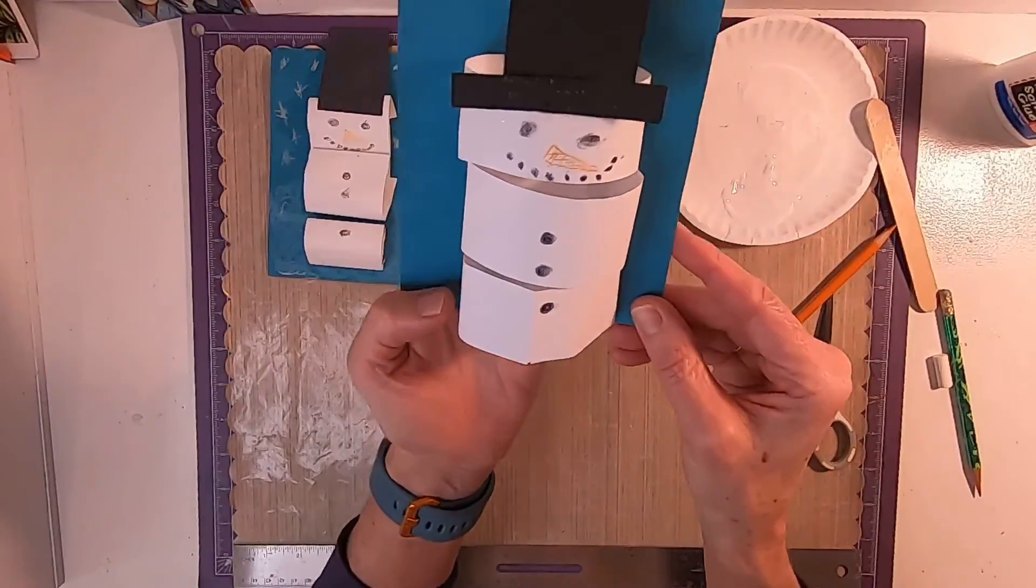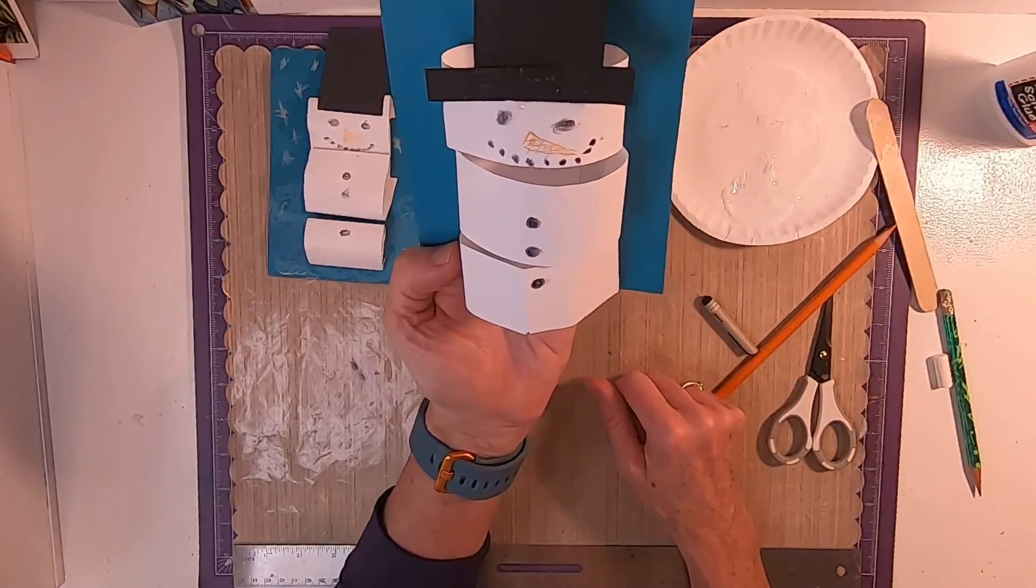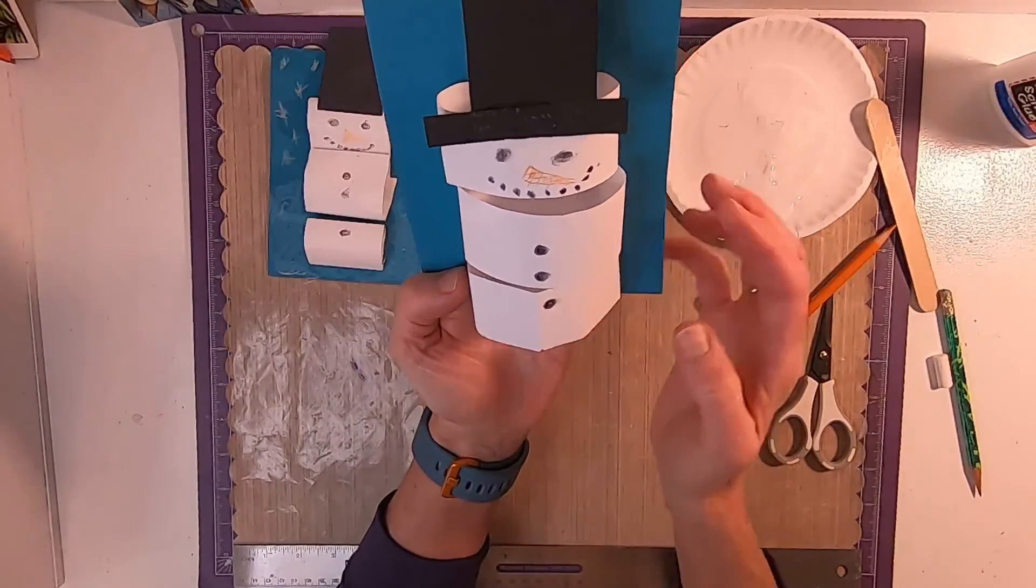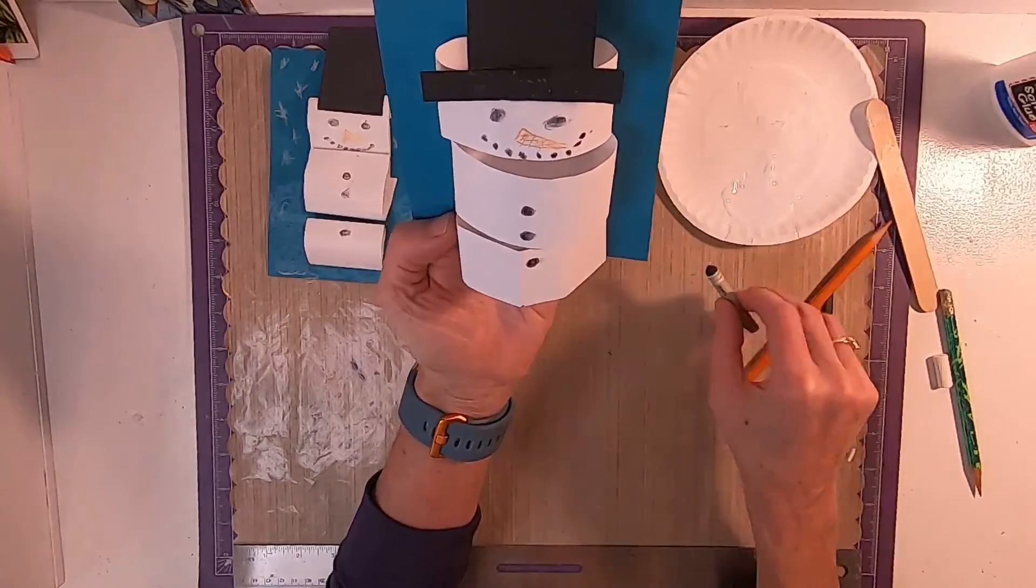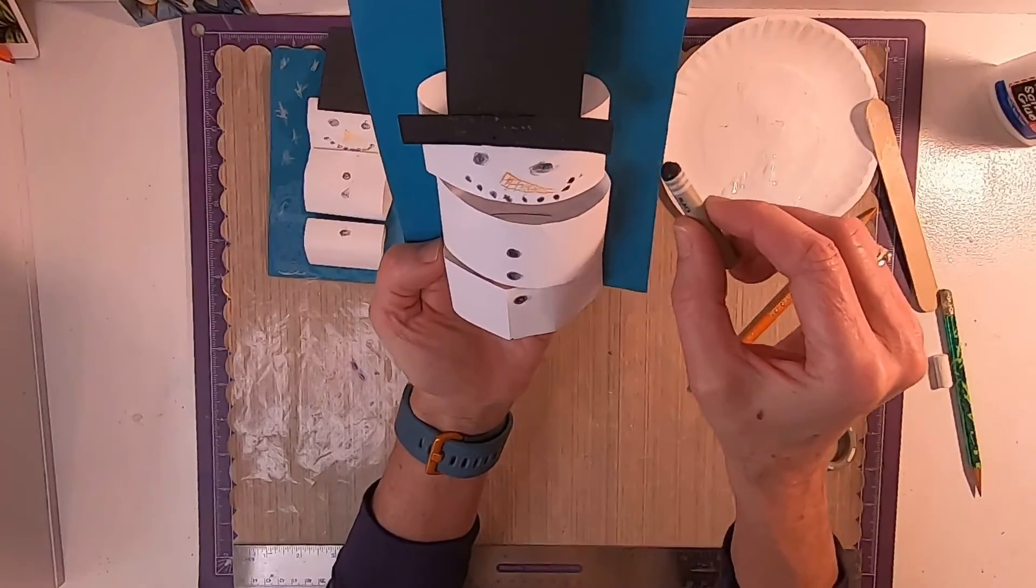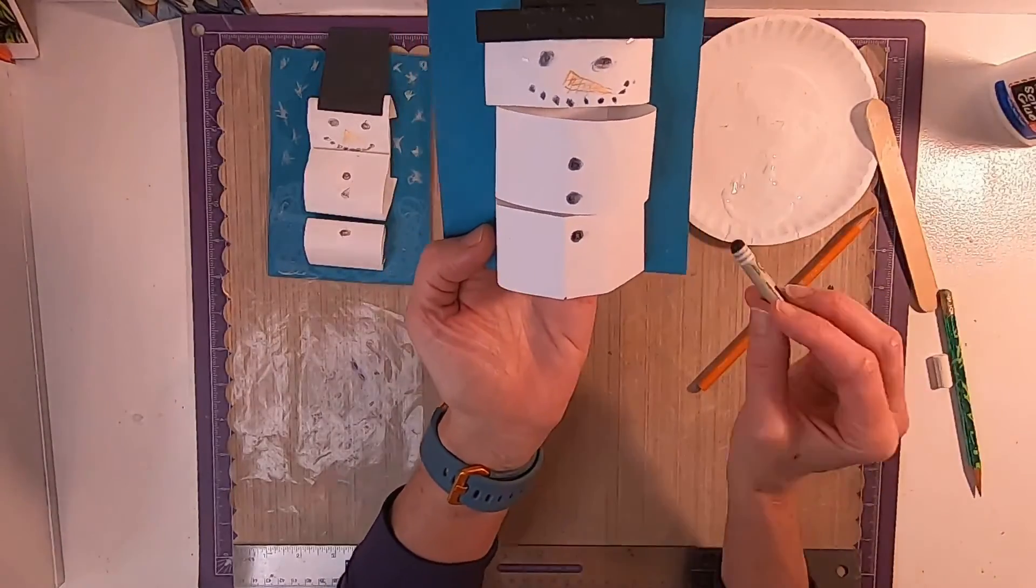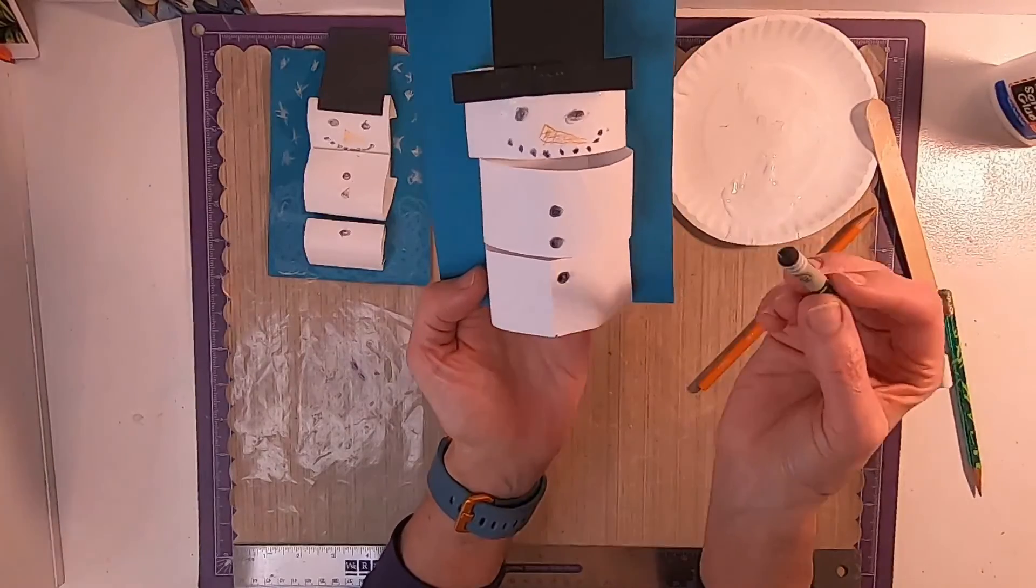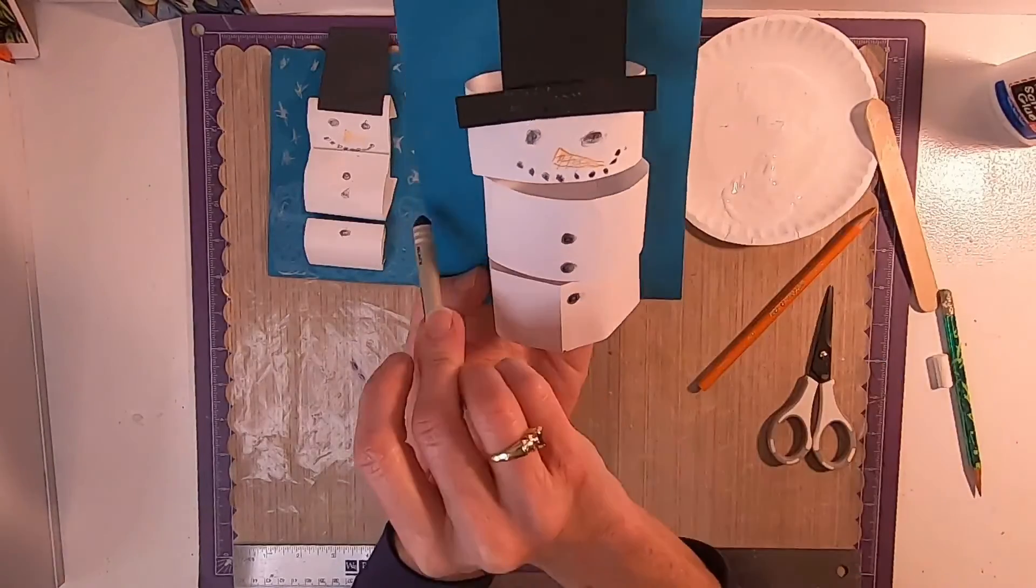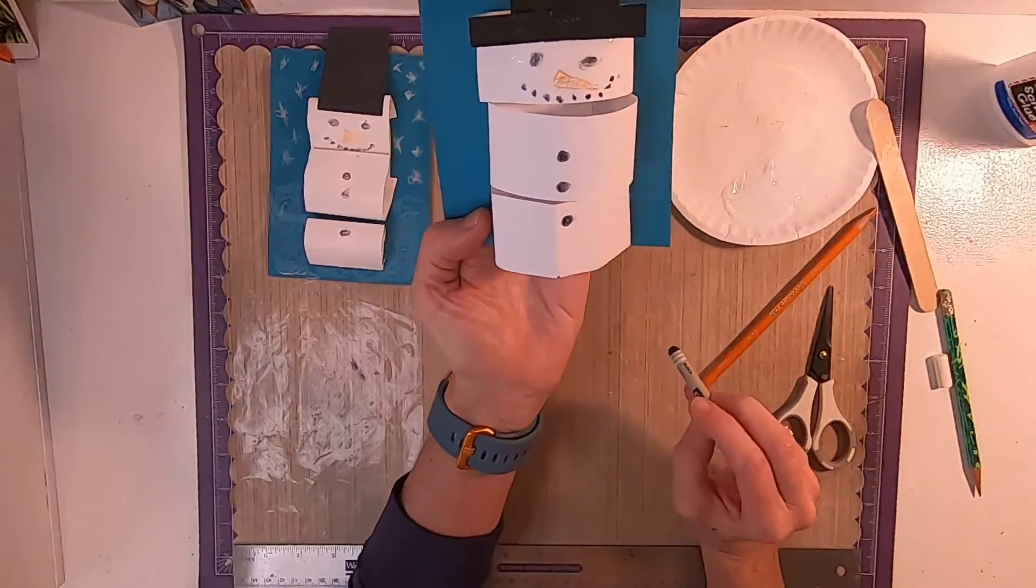Now, boys and girls, you're going to say, where is his arms, Miss Kim? Well, we can make some arms by drawing on the back part of the paper. That way, it gives it an illusion, right, that you have an arm.